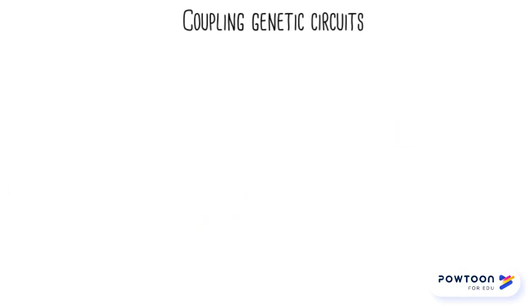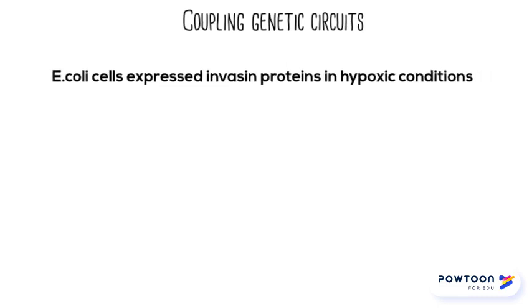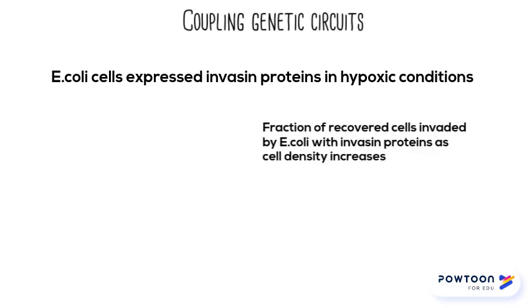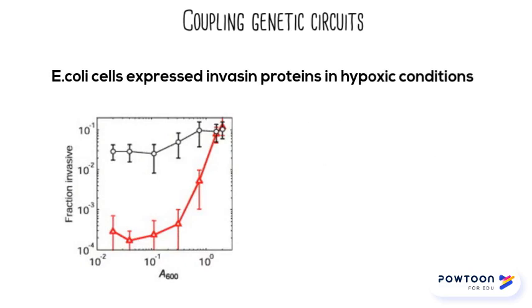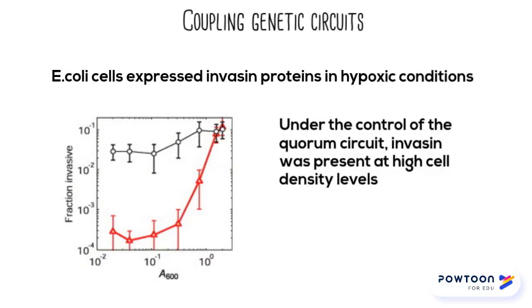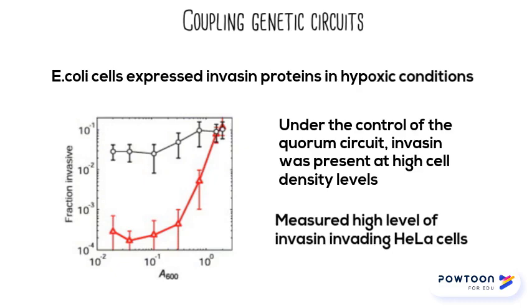The experimental results from this study revealed that with this synthetic signaling pathway created by coupling sensing circuits, E. coli cells were able to express invasin proteins in hypoxic conditions. It also revealed that invasin, when under the control of the quorum circuit, was present at high cell density levels. Additionally, high levels of invasin proteins were measured invading HeLa cells, which is a cell line derived from mammalian cervical cancer cells.